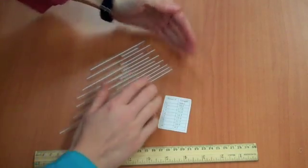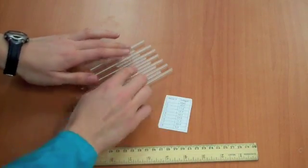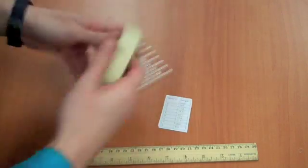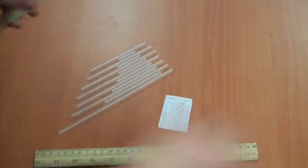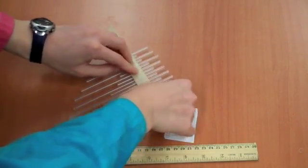Level them off so that the measured straws are at the same height, and then the spacer straws don't really matter. Get some tape, and tape them together.